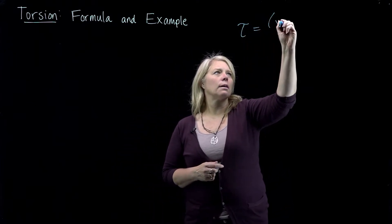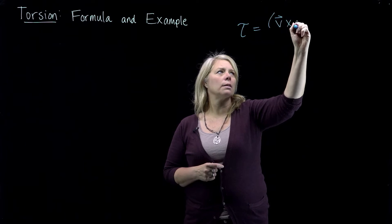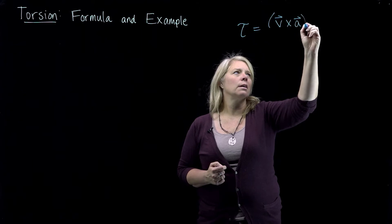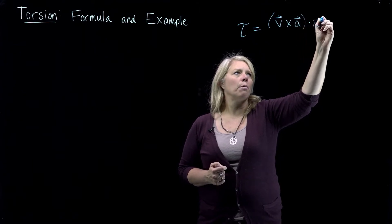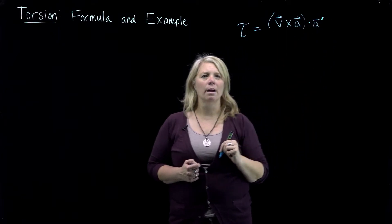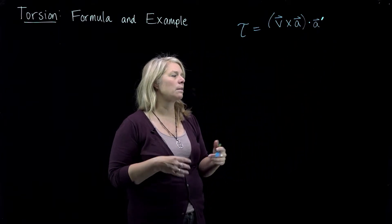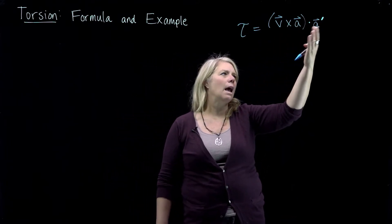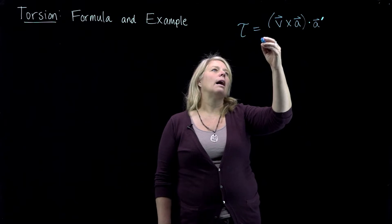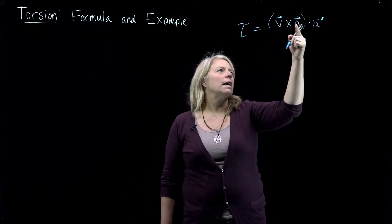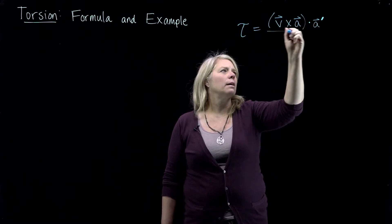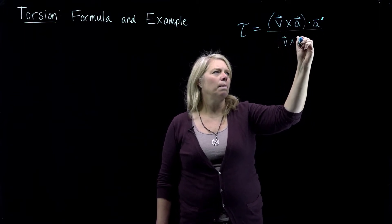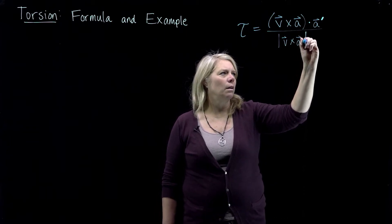Torsion equals v cross a — where v and a are your velocity and acceleration vectors — dot a prime. Be sure you write down that a prime carefully. A lot of times I see students miss that and take v cross a dot a, which gives zero every time, and that is not always the answer. So it's v cross a dot a prime, divided by the magnitude of v cross a, squared.